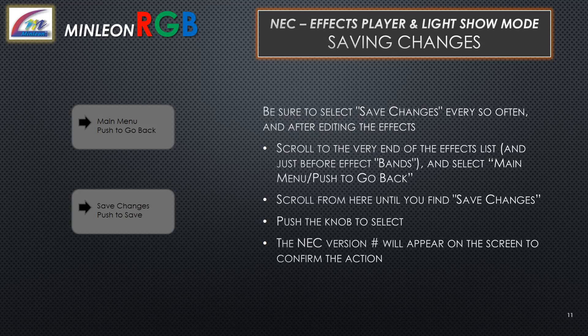Saving Changes. Please be sure to save changes every so often, and especially after editing your effects. Scroll to the very end of the effects list, just before the effect Bands, and select Main Menu — Push to Go Back. Scroll from there until you find Save Changes and push to select. The NEC version number will appear on screen to confirm this action.